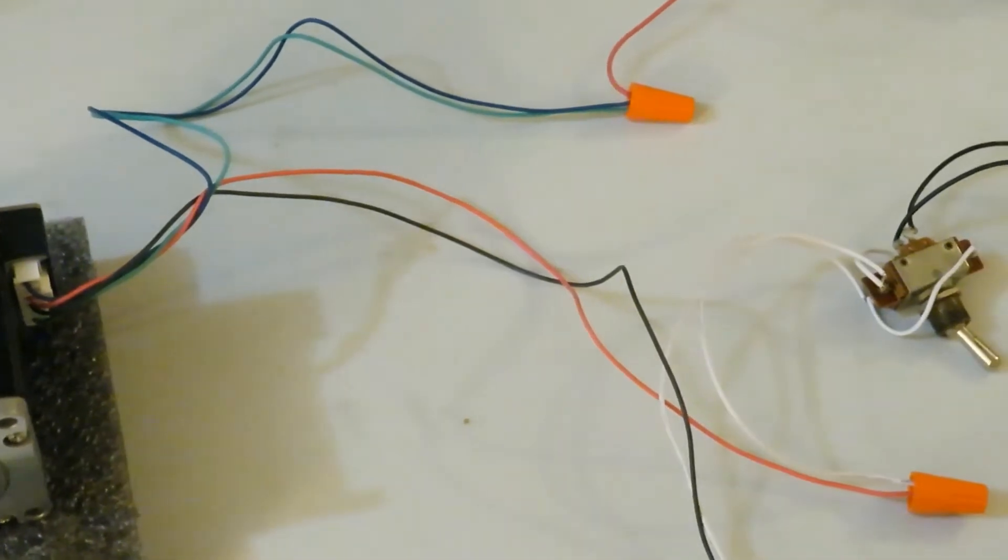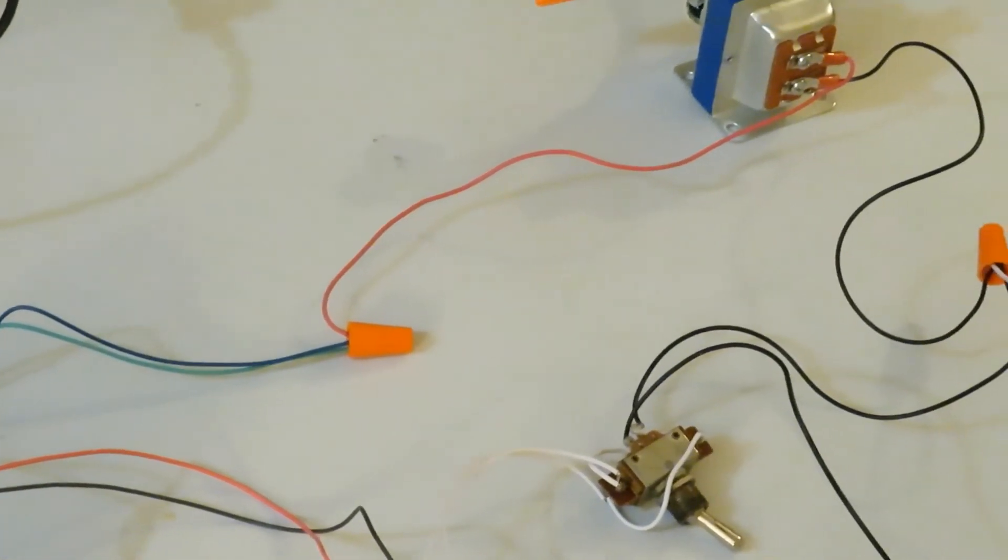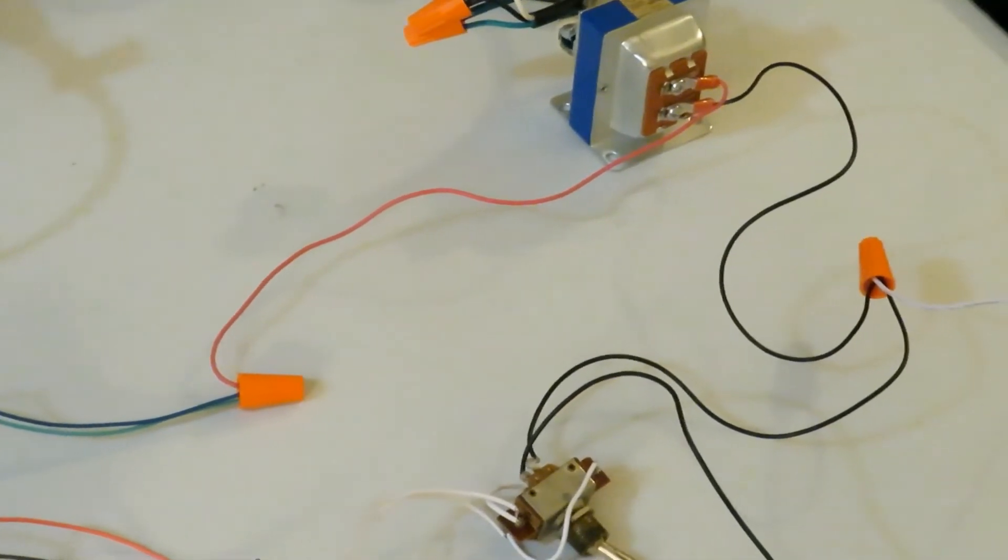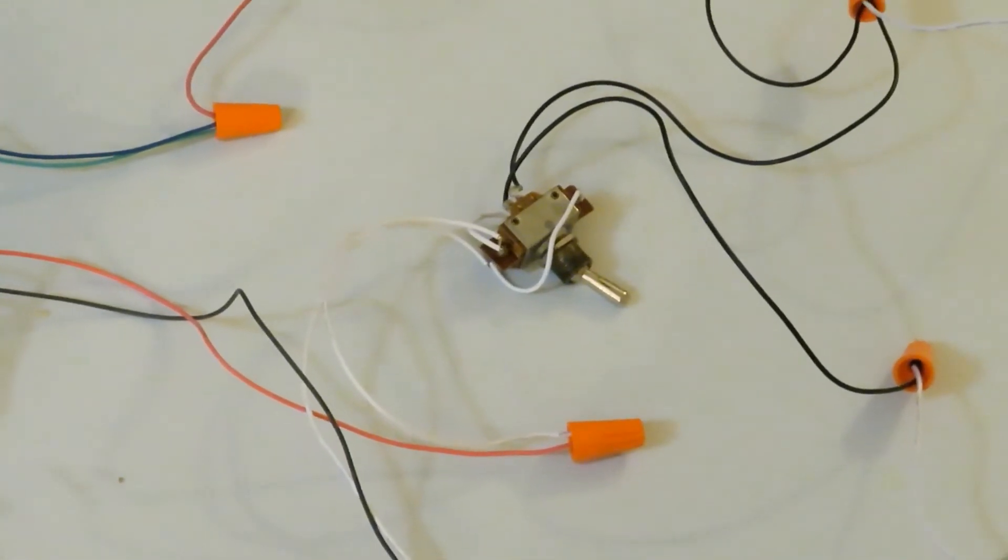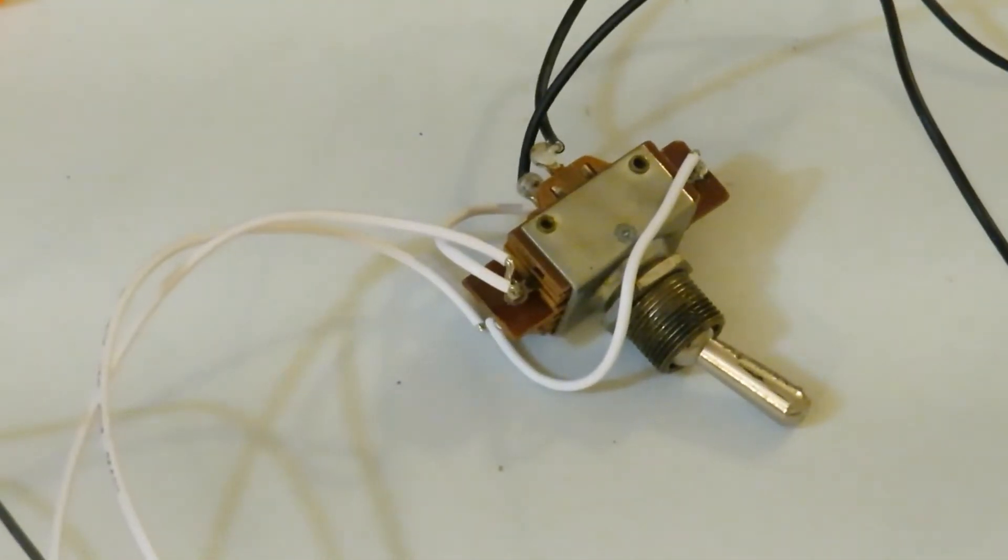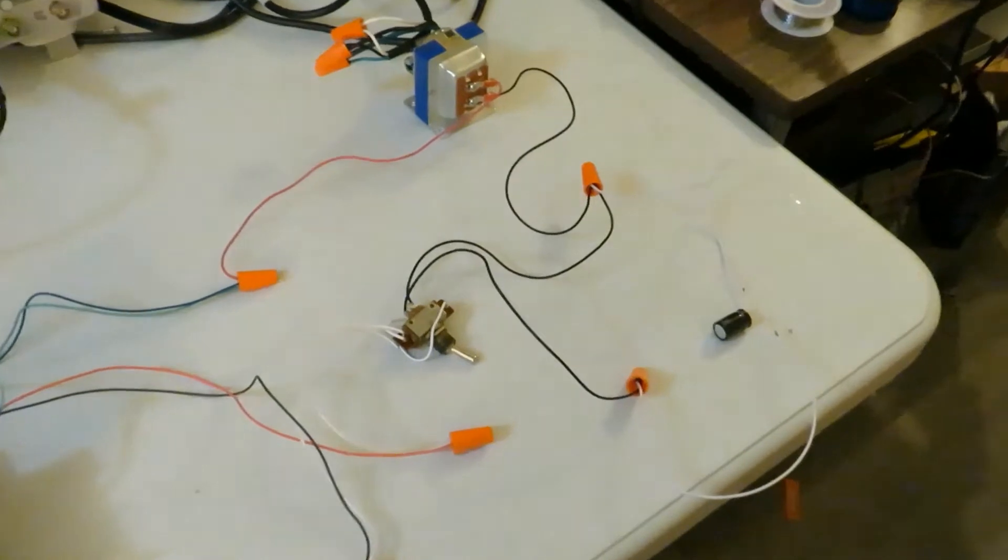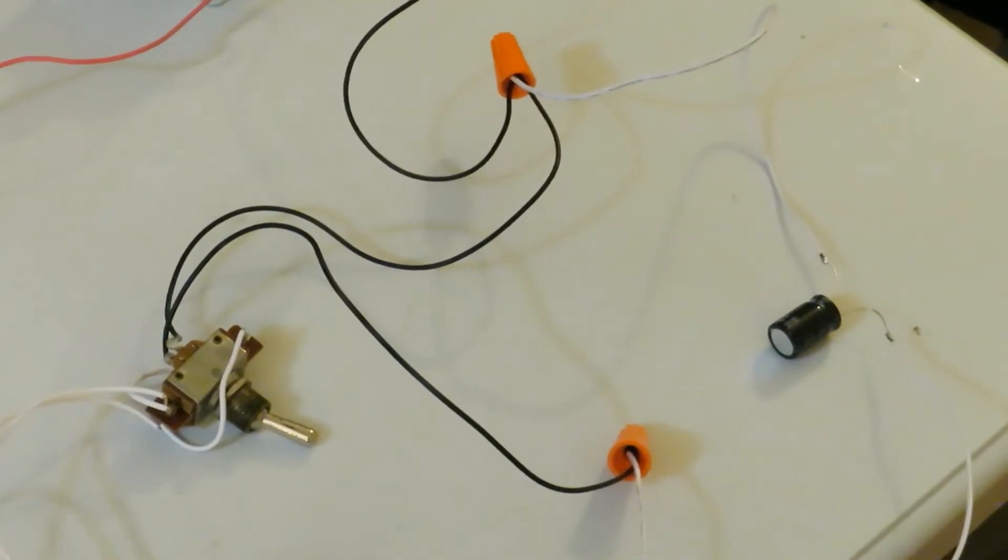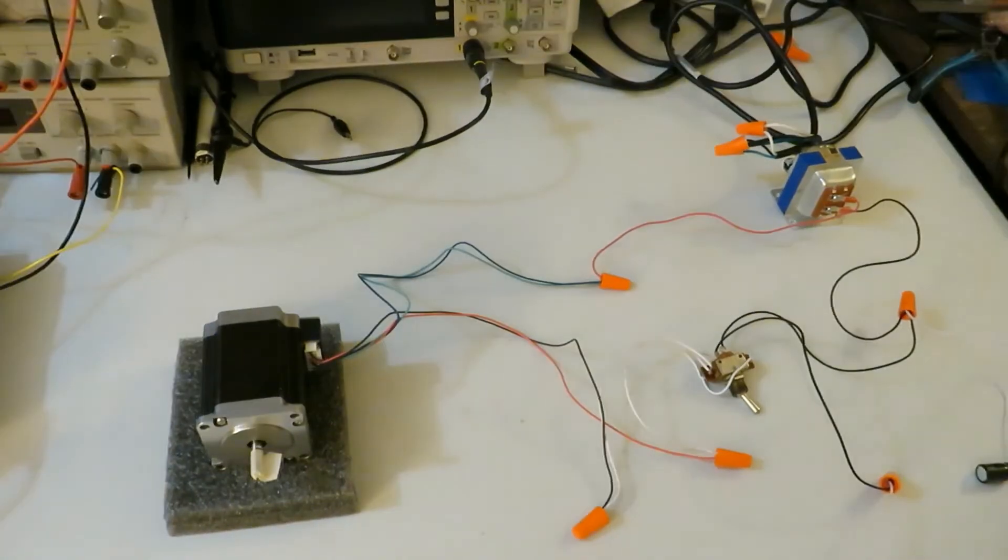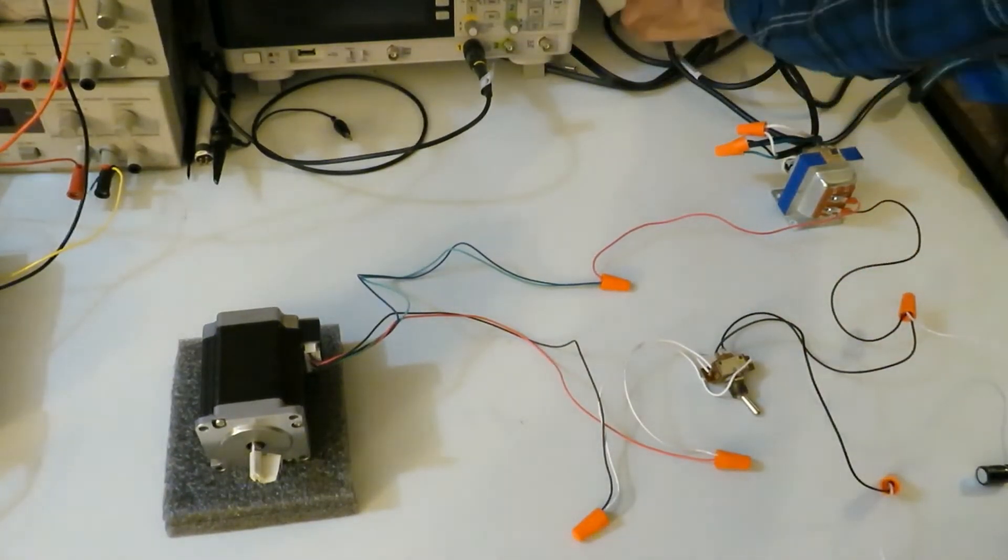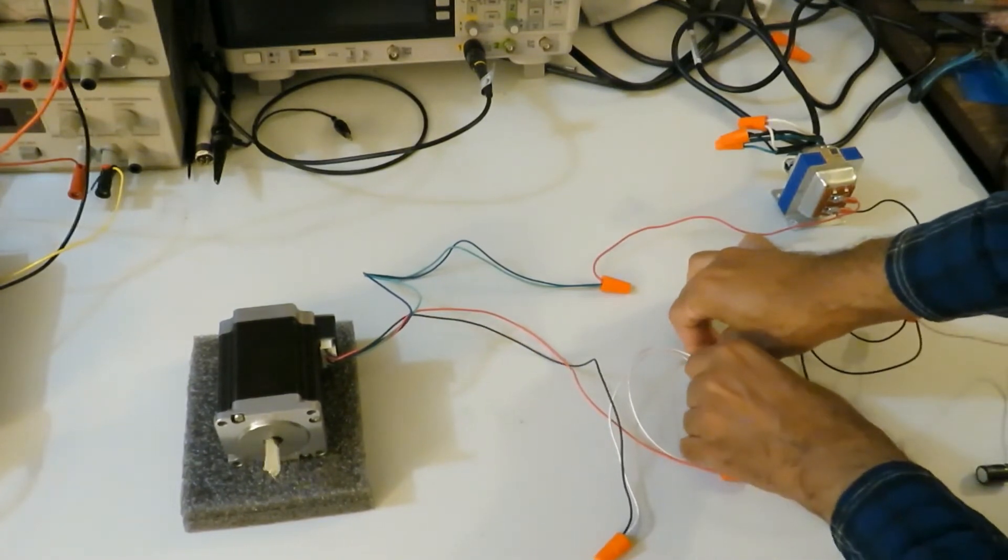One coil of this motor is connected to the transformer and the other coil via a bipolar capacitor. A double pole double throw switch is used to change the direction of rotation clockwise or counterclockwise. This is the switch. And here is the bipolar capacitor. The motor is switched off. The direction of rotation is changed by the switch.